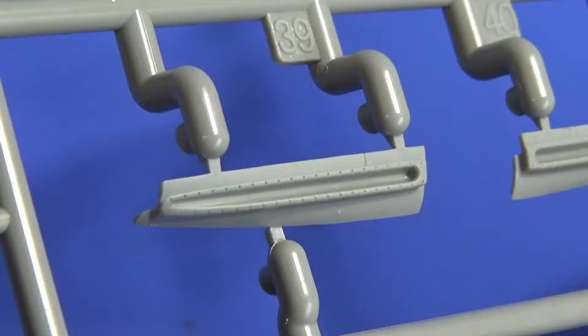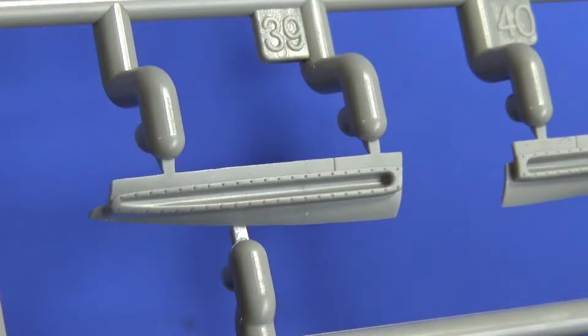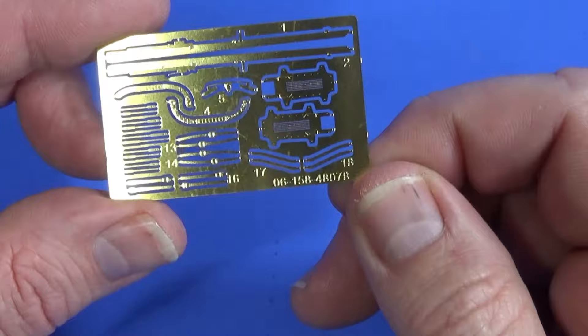These are the ports for the 20mm cannon in the belly. And again, they've got nice rivet detail around them, which is excellent. That should be able to be brought out quite nicely.